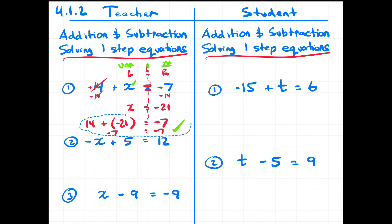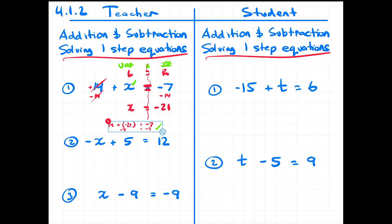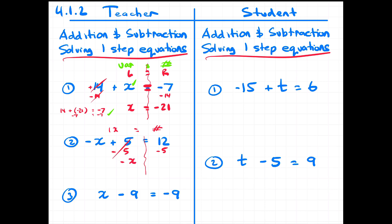Now let's move on to the next example. Example number two: I've got negative x plus five equals 12. Remember what we want to end up with is 1x equals what number. I don't want that positive five on the left, so I'm going to subtract five. Because of the equal sign, whatever I do to the left, I need to do to the right. The fives cancel each other out, and I'm left with negative x equals positive seven.